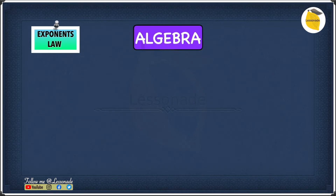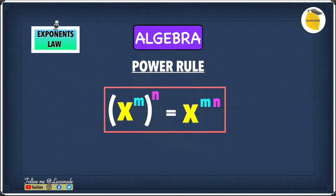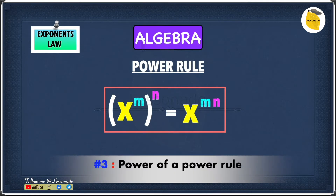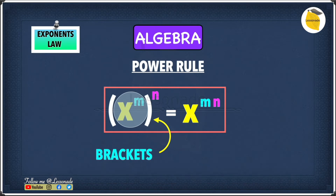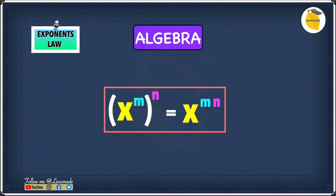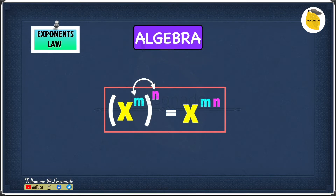Now let's learn some new rules. This one is called the power rule. The power rule is: brackets x raised to the power of m, raised to the power of n, equals x raised to mn. When you have a number raised to two powers, all you're going to do is multiply the two powers — so m times n. In other words, you multiply the two exponents, which are m and n.